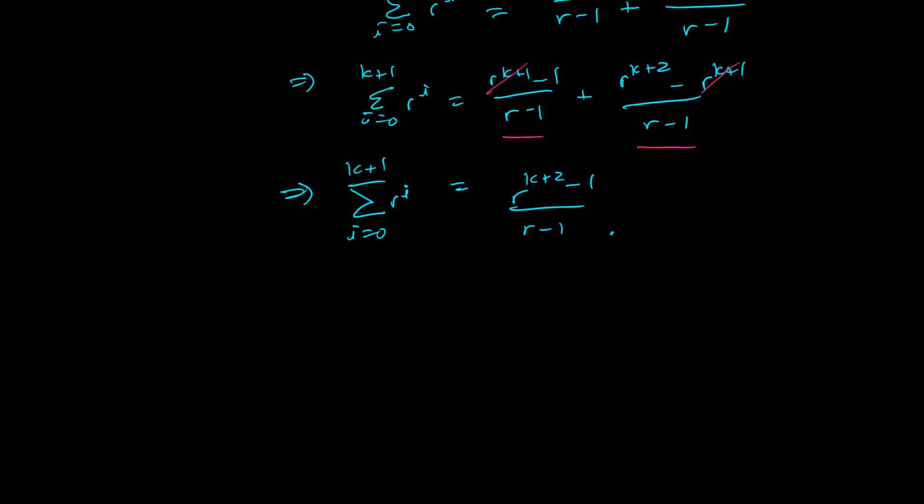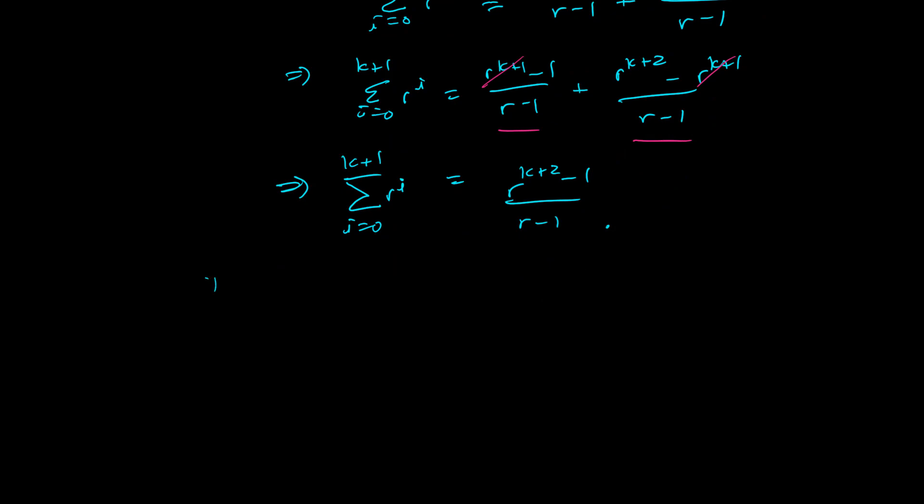So now to finish this, we say, therefore, by the principle of mathematical induction, you can denote that as PMI, the series going from 0 to n, r to the i power, is going to be r to the n plus 1 minus 1 over r minus 1, end of proof.